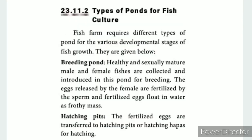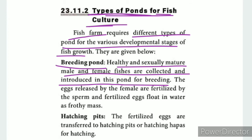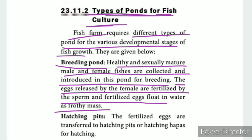Types of ponds for fish culture. A fish farm is called a 'meen' farm. There are different kinds of ponds used in fish culture. The first type is the breeding pond. Healthy and sexually mature male and female fishes are collected and introduced into this pond for breeding. The female releases eggs which are fertilized by the sperm, and the fertilized eggs float in water as a frothy mass.